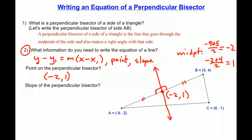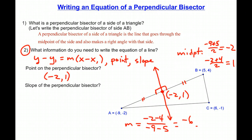Secondly, I need to know the slope of the red line. I don't have enough points on the red line to calculate it directly, but I can find the slope of AB. Since the perpendicular bisector's slope is the negative reciprocal of AB's slope, I can work from there. The slope of AB is negative 2 minus 4 over negative 9 minus 5, which equals negative 6 over negative 14. Cleaning up the signs, that's positive 6 over 14, and reducing by 2 gives 3 sevenths.